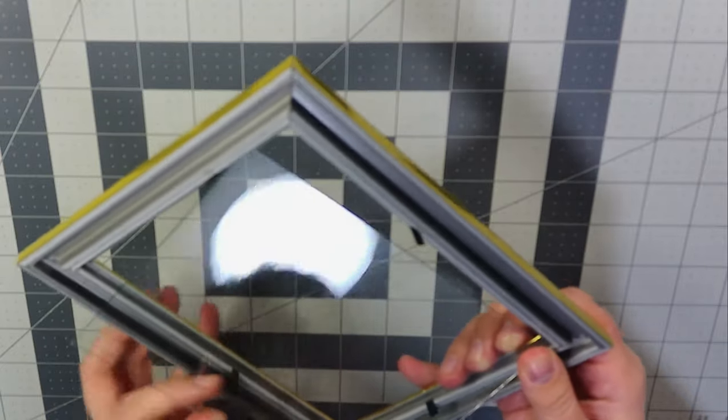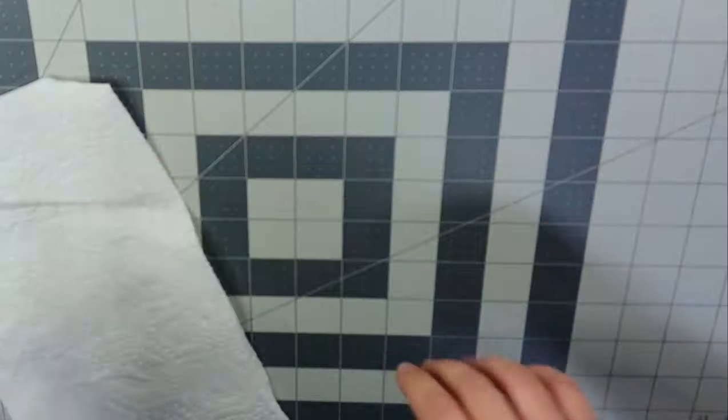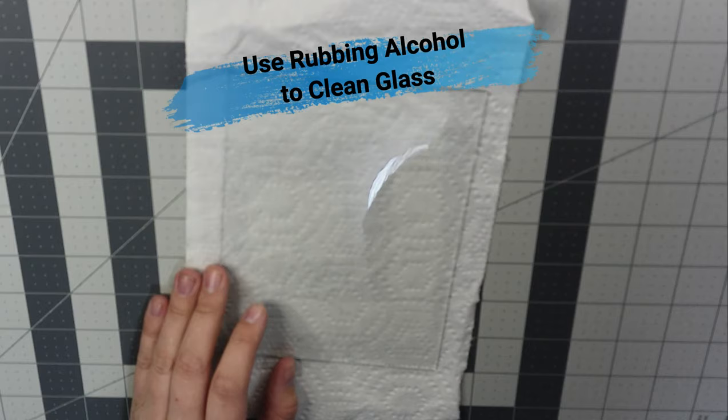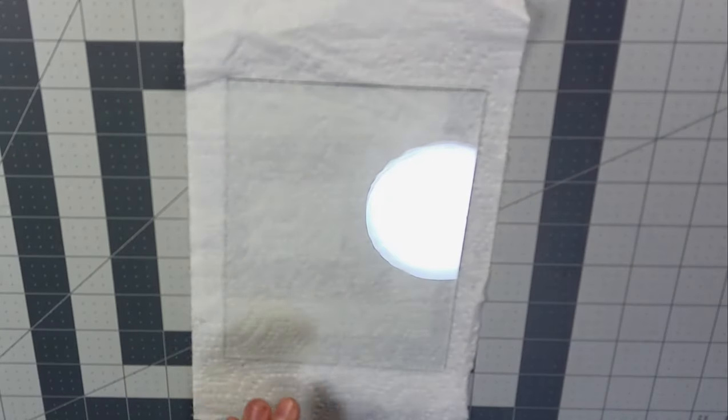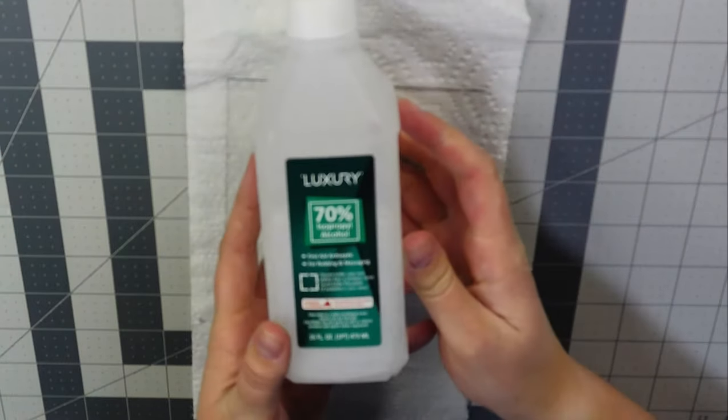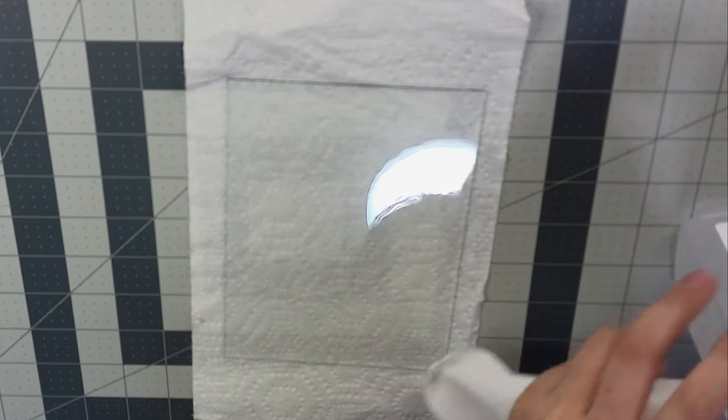I'm going to put this paper towel under the glass so that way it will be easier for you guys to see. Next we are going to grab our rubbing alcohol and we're going to use that to clean the glass.